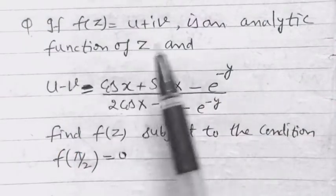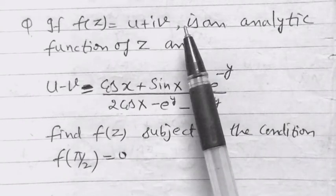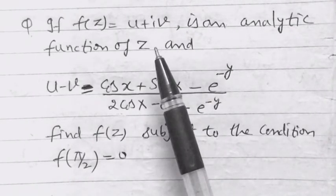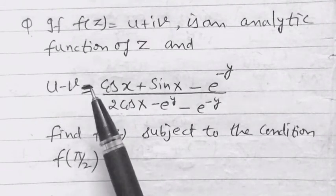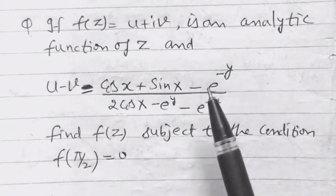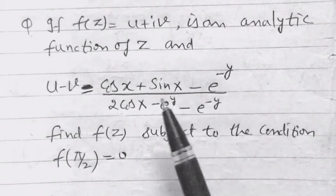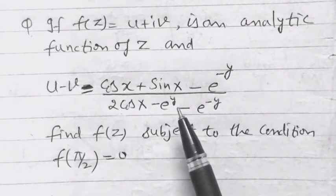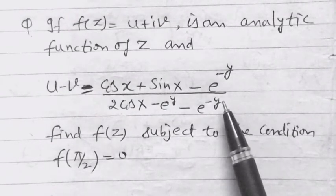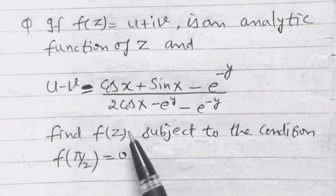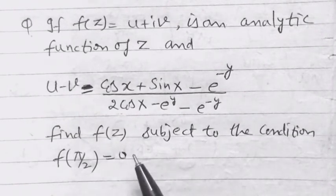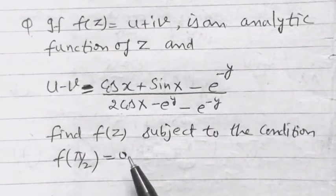If f(z) = u + iv is an analytic function of z and u - v = (cos x + sin x - e^(-y)) / (2cos x - e^y - e^(-y)), find f(z) subject to the condition f(π/2) = 0.